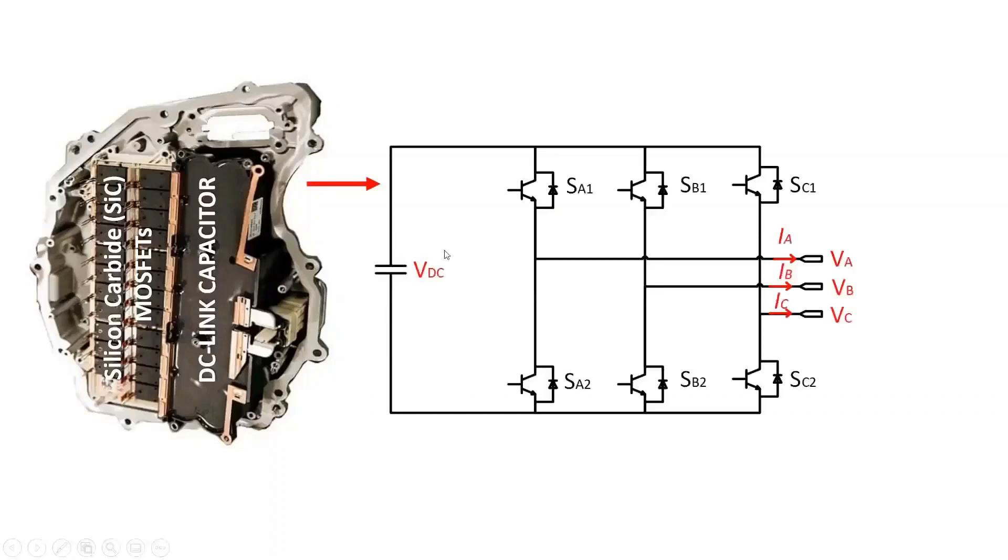The Tesla Model 3 uses a three-phase two-level inverter topology with an input battery voltage of 400 volts. The conventional three-phase two-level inverter consists of a DC-link voltage and six switching power semiconductor devices.